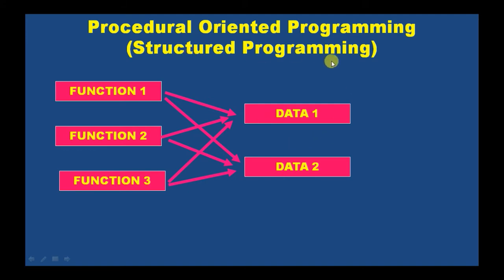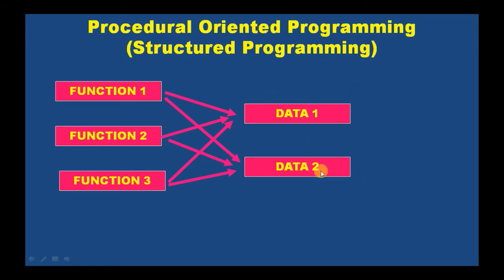This is structured programming. When we use this type of programming for large programs or software, it is required to define some data items as local data and some as global data. This will produce confusion about which data are used by which function. Also, any software developed using structured programming is very difficult for maintenance, upgrading, or modifications. These are the drawbacks of procedure-oriented programming.